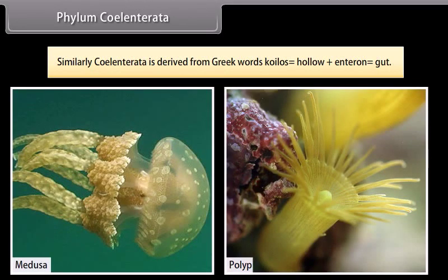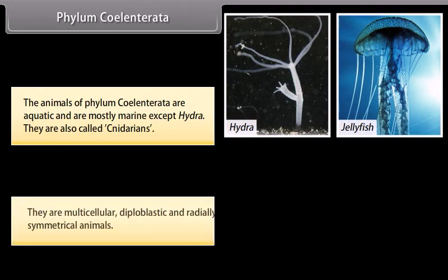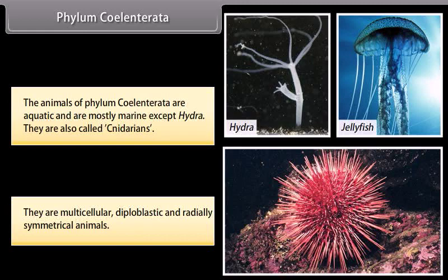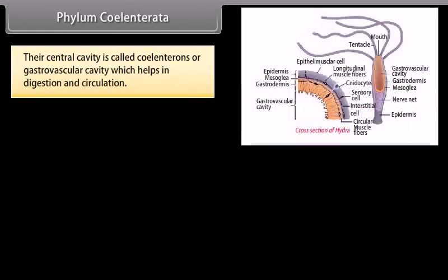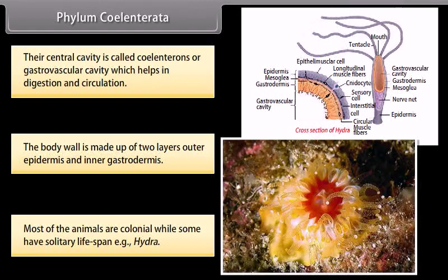Phylum Coelentrata. Coelentrata is derived from Greek words: koilos, meaning hollow, plus enteron, meaning gut. The animals of Phylum Coelentrata are aquatic and mostly marine, except hydra. They are also called cnidarians. They are multicellular, diploblastic, and radially symmetrical animals. Their central cavity is called the coelenteron or gastrovascular cavity, which helps in digestion and circulation. The body wall is made up of two layers: outer epidermis and inner gastrodermis. Most of the animals are colonial, while some have a solitary lifestyle, that is hydra.